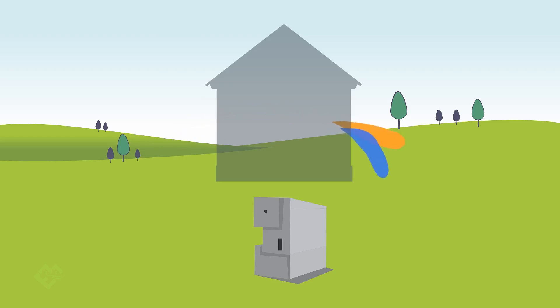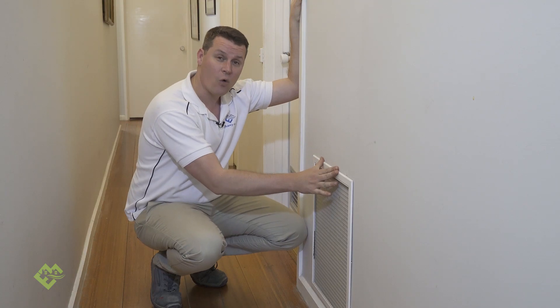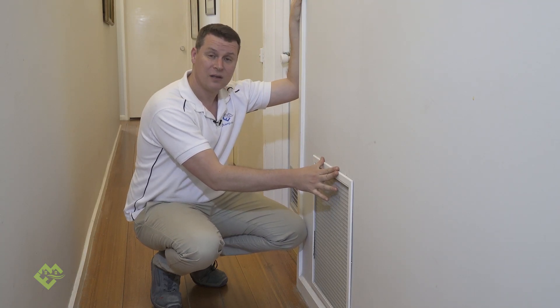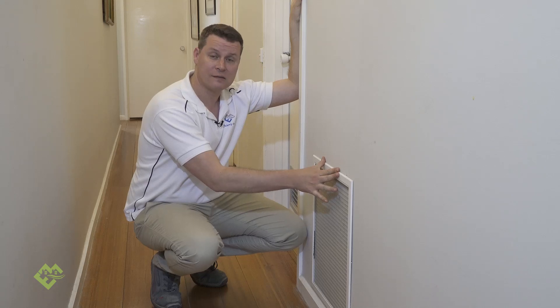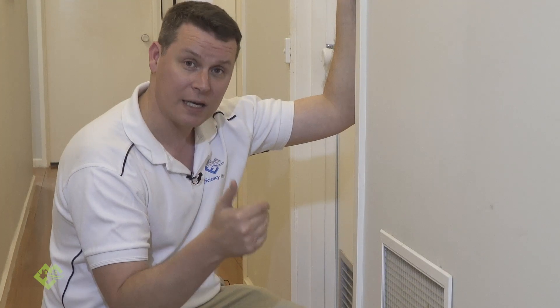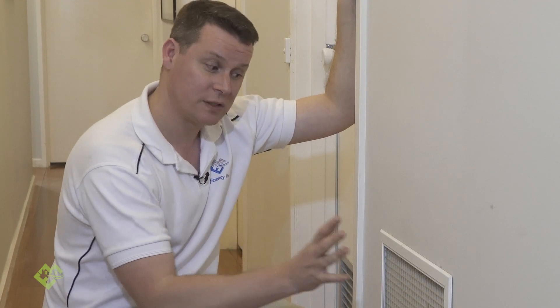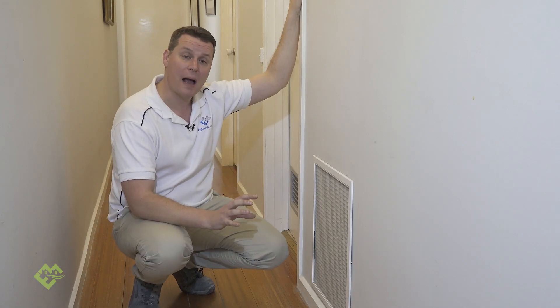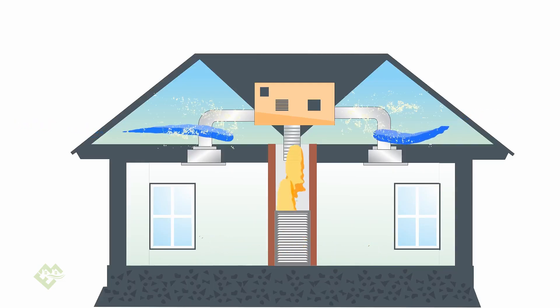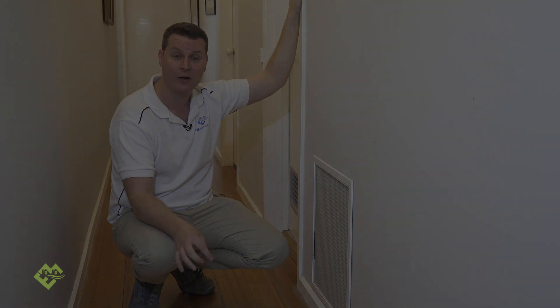The other important thing when it comes to ducted heating is having all your doors open. Your supply vents need to be able to get air back to the return. As soon as you start pushing air directly to the outside via rooms where the door is closed and you might have wall vents, it's going to start drawing in air wherever it can on the return side. Economically, you could be paying an extra two hundred dollars a year for having one of these ducted heating returns completely open to your roof void or underfloor.